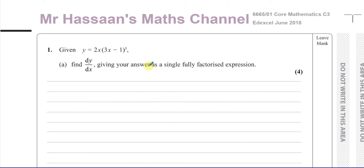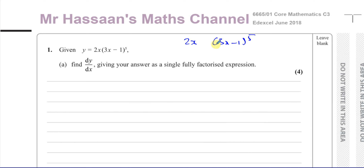So first of all, we want to differentiate this function: y equals 2x times (3x minus 1) to the power of 5. Now here we have two separate things multiplied by each other. You have 2x and then you have (3x minus 1) to the power of 5. In the second one, you have a function inside a function.